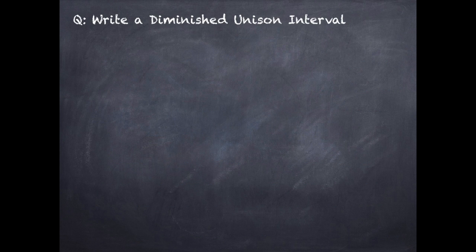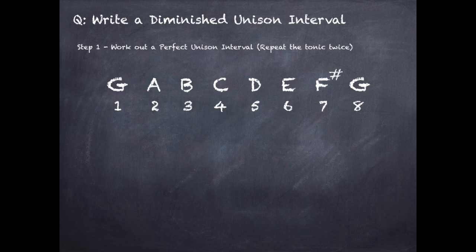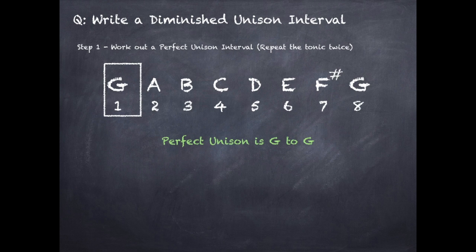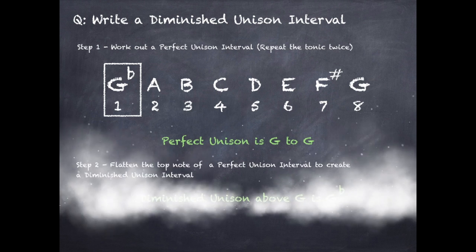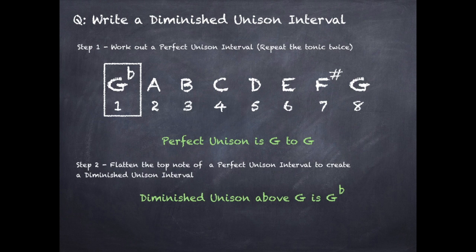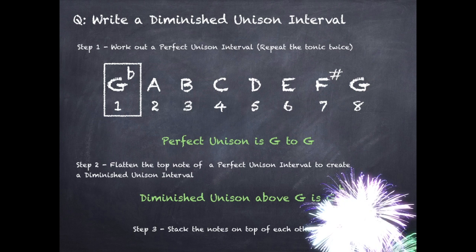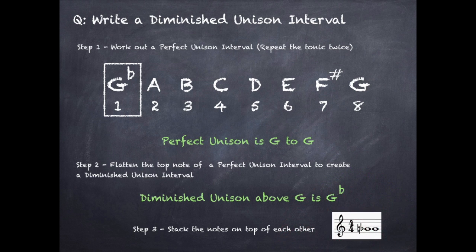Write a diminished unison. Step 1: work out a perfect unison where we repeat the tonic note twice. In this example we're going to use G major, so a perfect unison is G to G. Step 2: flatten the top note of the perfect unison interval to create a diminished unison interval, so the second G becomes G flat. Step 3: place the two Gs next to each other, using a natural sign and a flat sign to show that one note is G natural and one is G flat.